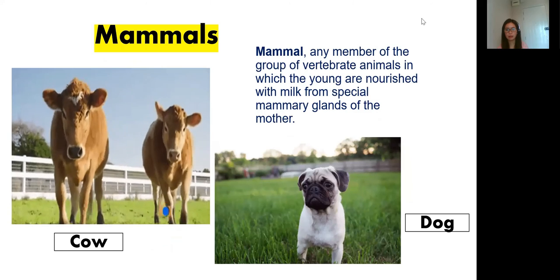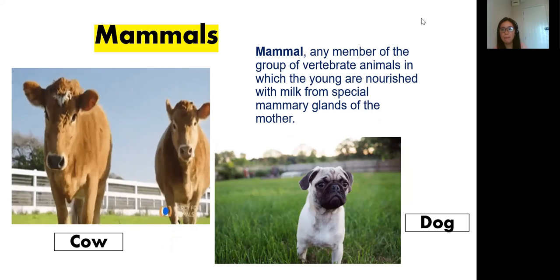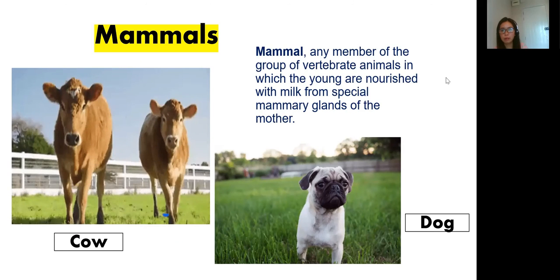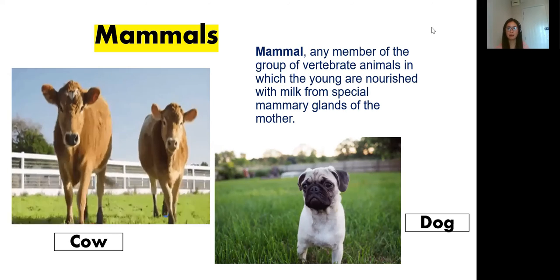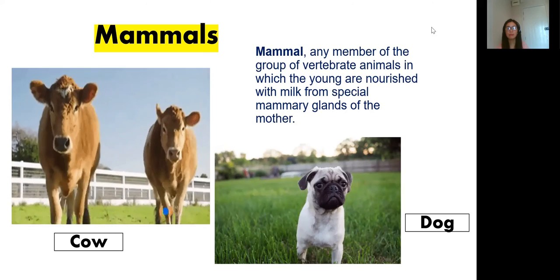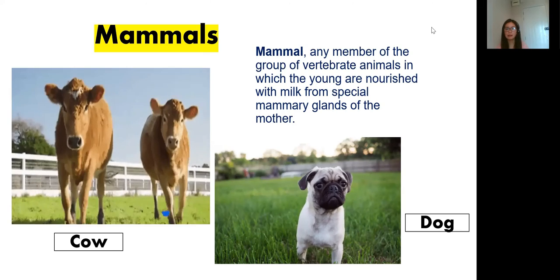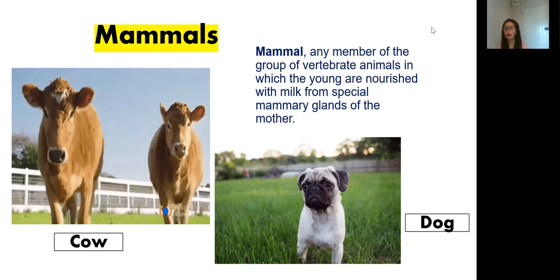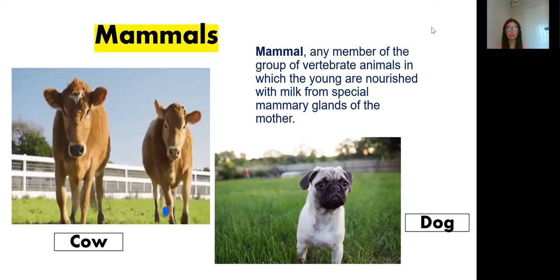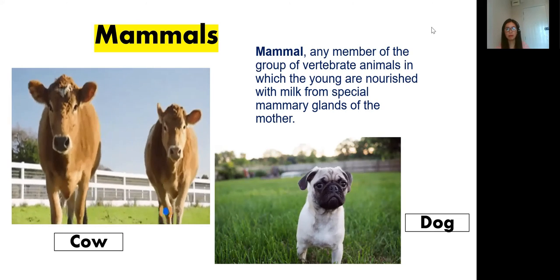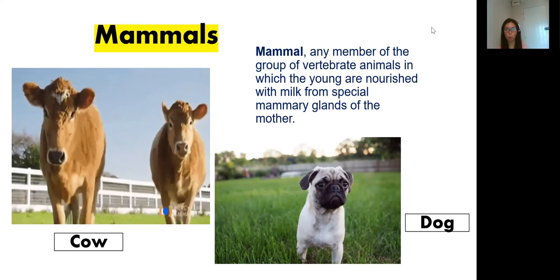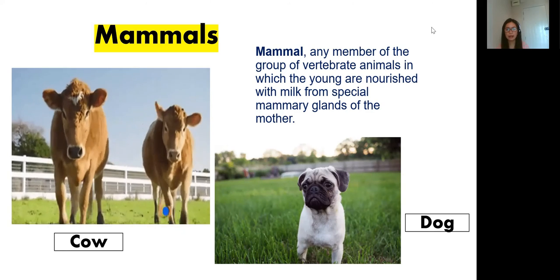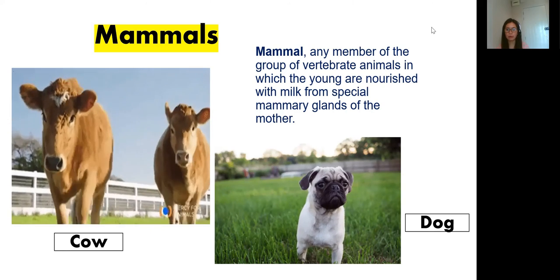Next is mammal — please say the word: mammals. A mammal is any member of the group of vertebrate animals in which the young are nourished with milk from the special mammary glands of the mother. So mammals have mammary glands. The examples of mammals are cow — look at the picture — and dog.